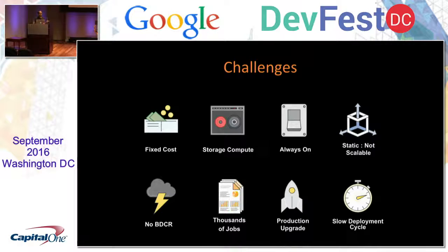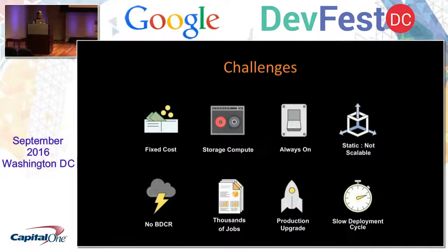There was no BCDR — it was a single point of failure. In case of disasters, that was the only cluster we had, and creating a BCDR solution would have cost twice as much. Based on business requirements, we had thousands of jobs maintained by operations, creating a nightmare to track all dependencies. So many jobs running in production also required a lot of legacy knowledge, which was a major challenge as a developer.